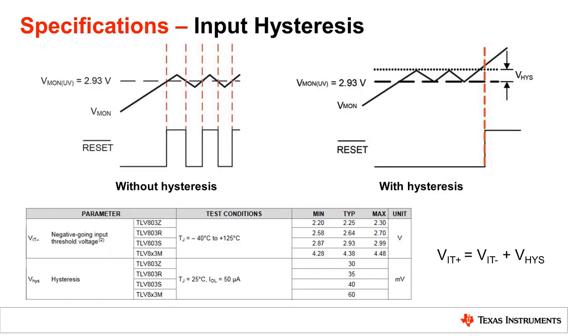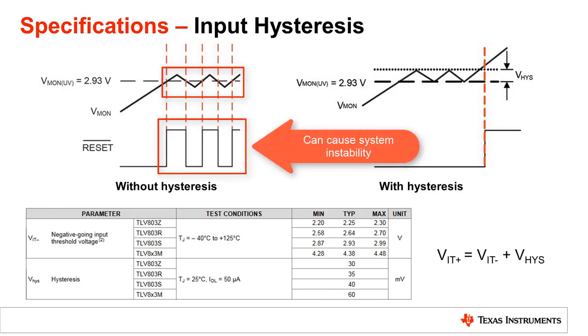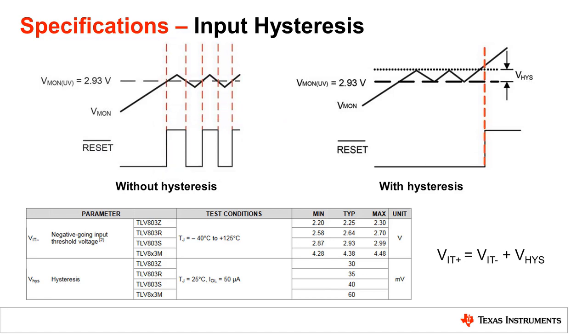Another input specification to consider is the stability of the monitored input voltage. Given an event where Vmon is rising but begins to oscillate around the threshold voltage VmonUV, the output of the supervisor will also oscillate, potentially leading to system instability. To counteract this effect and ensure that the voltage rail is stable, an additional amount of voltage, called hysteresis voltage, VHYS or VHIS, is added to the negative going threshold voltage. Specifically, if the output of a voltage supervisor were to fall and cross VmonUV, the output must then rise above VmonUV plus Vhysteresis to deassert the reset output.